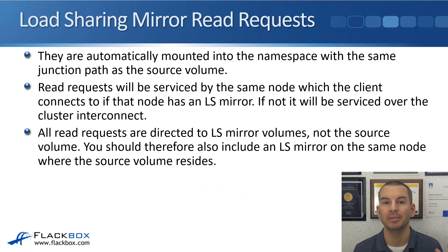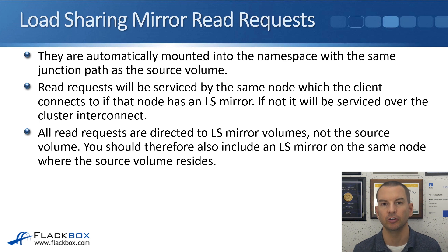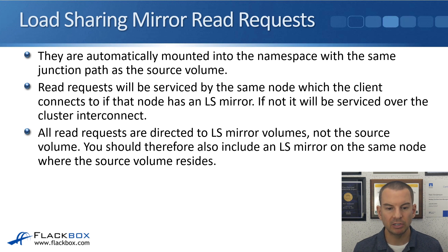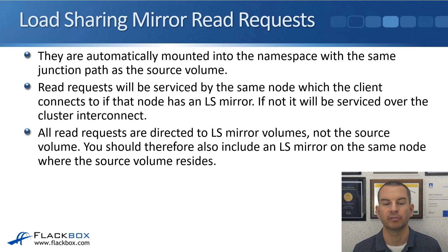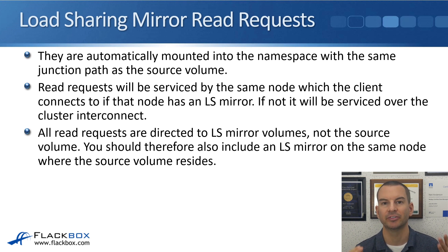Load-sharing mirrors are automatically mounted into the namespace with the same junction path as the source volume, so load balancing and redundancy is provided automatically. Read requests will be serviced by the same node which the client connects to if that node has a load-sharing mirror. If not, it will be serviced over the cluster interconnect.